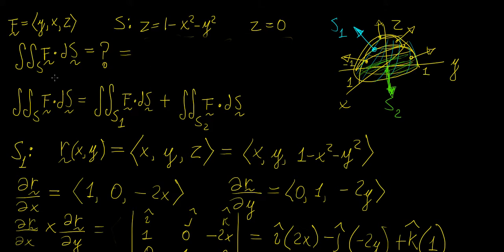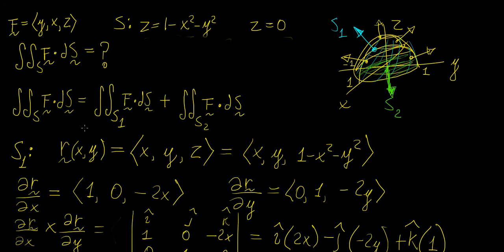The question is how do we actually find the flux here? What we can do is find the flux across each surface individually and then add the results together, just in the same way that if we had a line integral consisting of multiple curves, we would do the line integral of each curve individually and then add the results together.